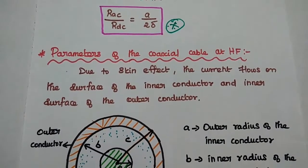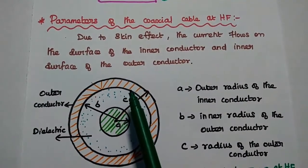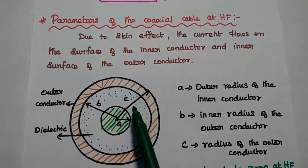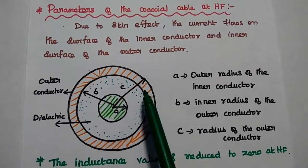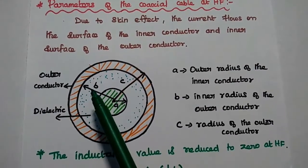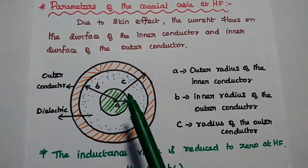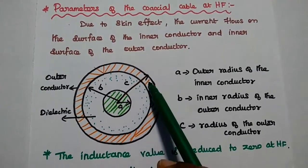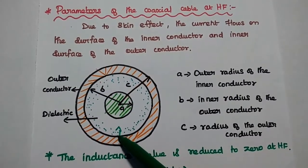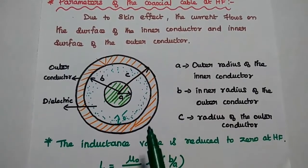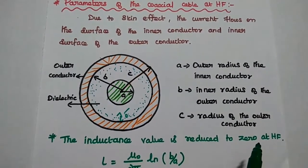Next, we obtain the parameters of the coaxial cable at high frequency. Due to skin effect, the current flows on the outer surface of the inner conductor and the inner surface of the outer conductor. The coaxial cable consists of two conductors: the inner conductor with radius A, and the outer conductor with inner radius B and outer radius C. Due to this internal current flow, the inductance value is reduced to zero at high frequency, and is given as L = (mu_0 / 2*pi) * ln(B/A), with unit Henry per meter.